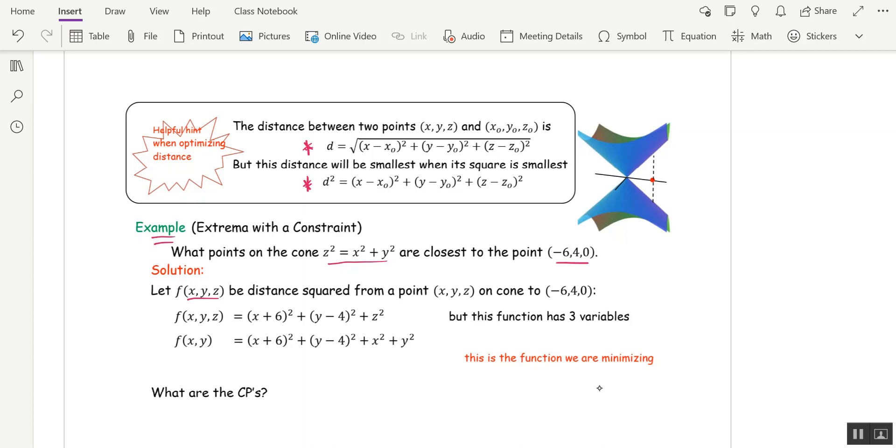So the first thing I'm going to do is let f of x, y, z be the distance squared from a point on the cone to negative 6, 4, 0. And so what I did, this is my x naught, y naught, z naught in this formula up here for distance squared. And that's how I got this equation. Now that equation obviously has three variables. And to use the second derivative test, we need two variables. So no worries. We can replace z squared with x squared plus y squared because we're living on the cone.